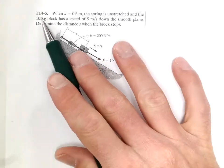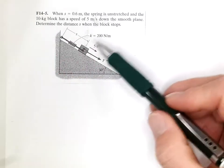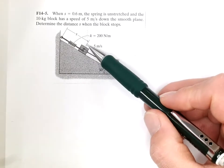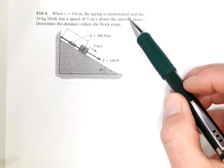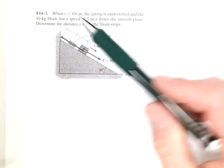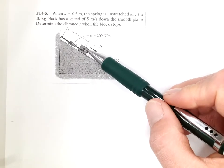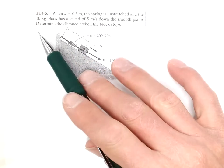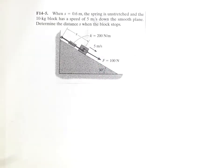Problem F14-5. When S equals 0.6 m, the spring is unstretched, and the 10 kilogram block has a speed of 5 meters per second down the smooth plane. Determine the distance S when the block stops.